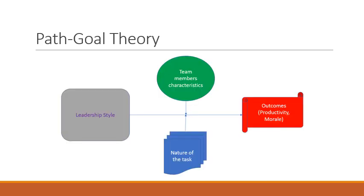As you can see in this diagram, according to the path goal theory, leadership style is contingent upon the nature of the task. In order to give desired outcomes, the outcome can be measured using productivity and the morale of the employees. Hence, the major proposition of the path goal theory is that a manager should choose a leadership style that considers the group member characteristics and the nature of the task to achieve the desired outcome as well as to boost the overall morale of the employees.